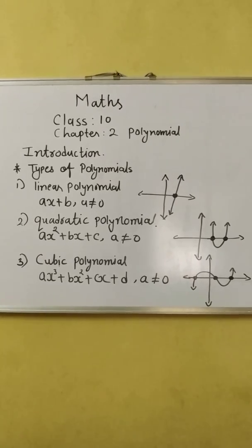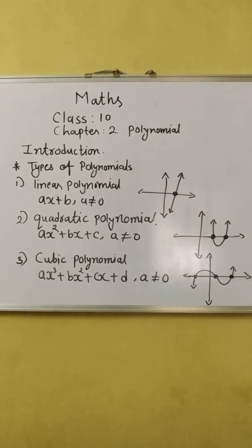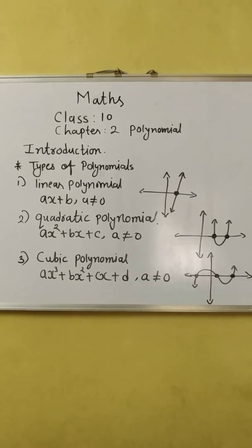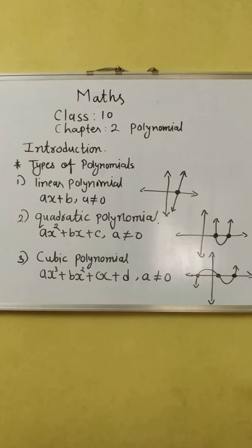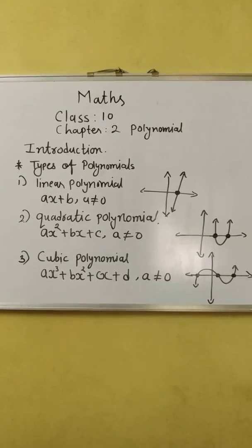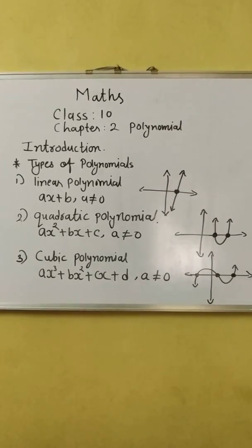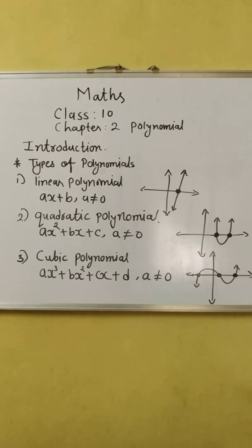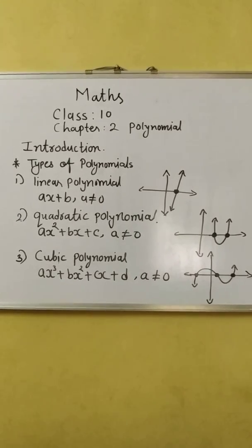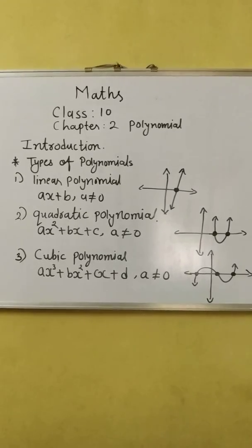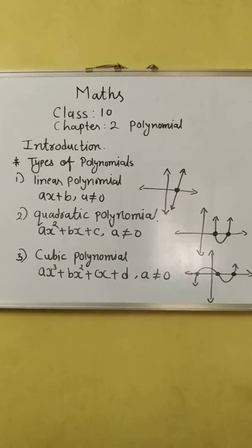The third one is cubic polynomial, which has general formula as ax³ + bx² + cx + d where a cannot be 0. As I told you when a will become 0, it will be called as quadratic polynomial.